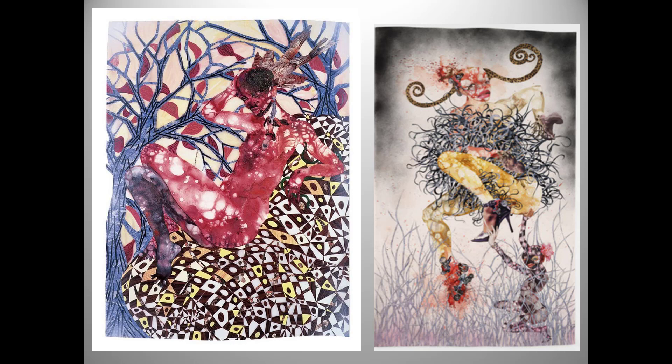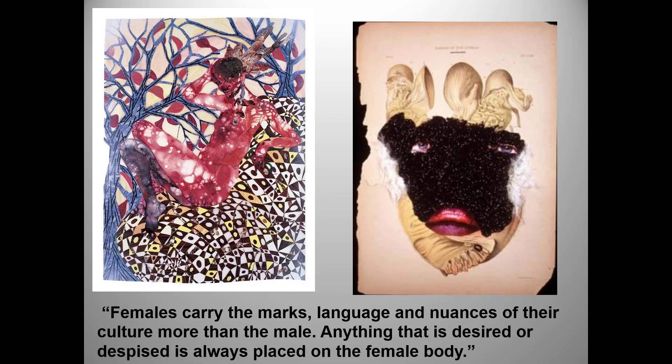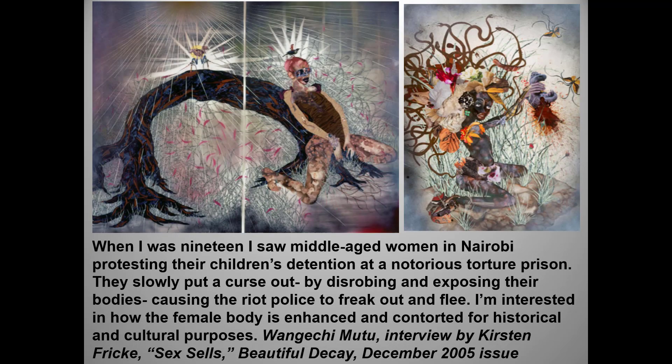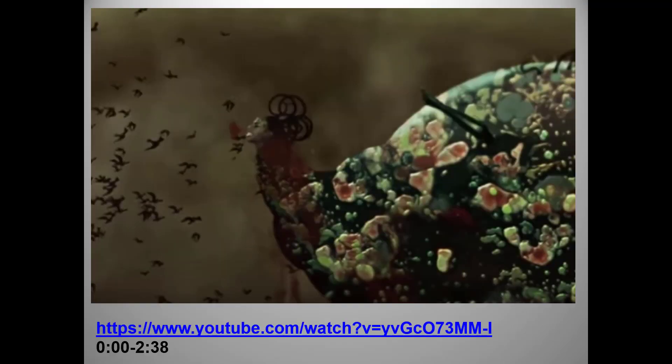This work engages with gender roles and ethnic and cultural stereotypes. Mutu is especially interested in the way black female bodies have been stereotyped and exploited, but this female is surely equipped to fight back. The work entitled Cancer of the Uterus is actually a pathology diagram overlaid with glitter and a woman's eyes and lips. These collages demonstrate female power, vulnerability, and stereotyping. The artist actually made a film starring one of her cyborg creatures.